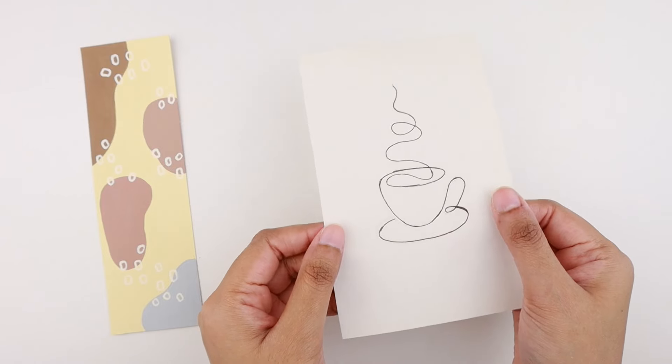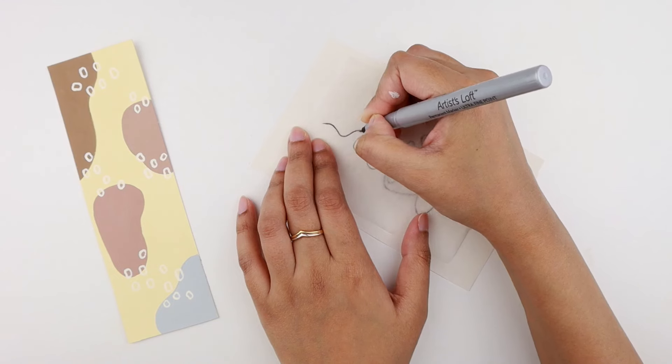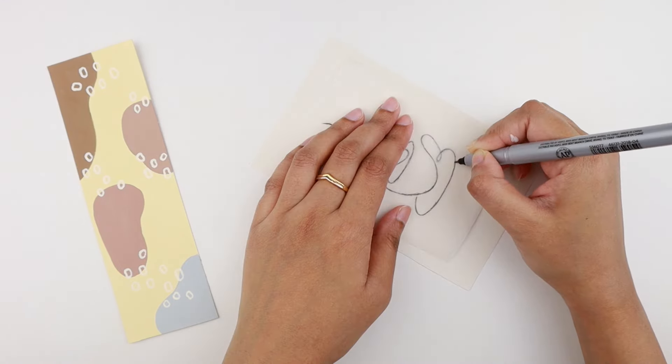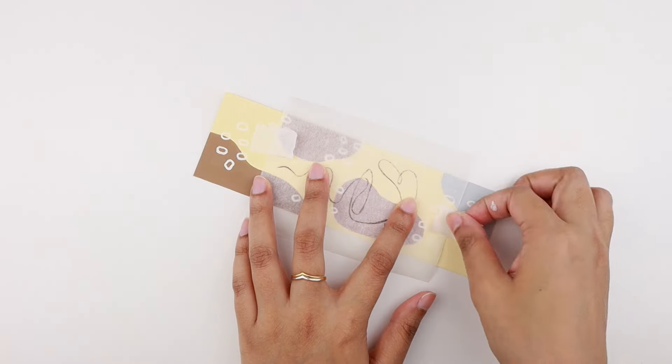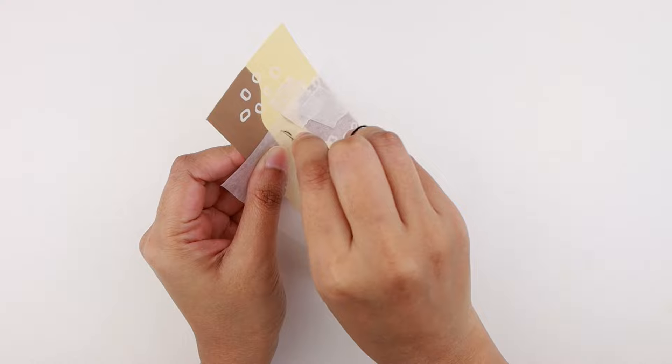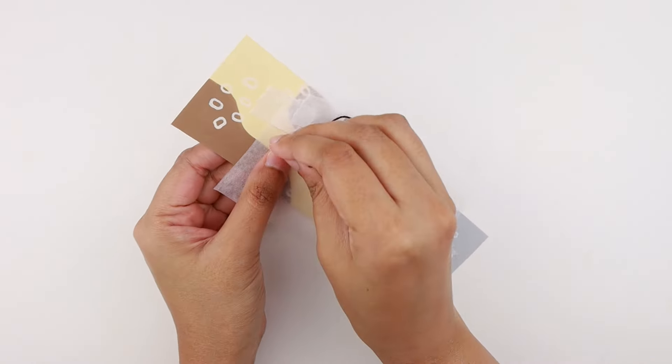I drew a line art of a cup of coffee. Now I'm taking a piece of parchment paper and tracing the line art onto it. Then I'm placing it on the paper and taping it down to hold it in place. Using a needle, I'm poking holes through the paper following the line art. I'm also trying to equally space them out.